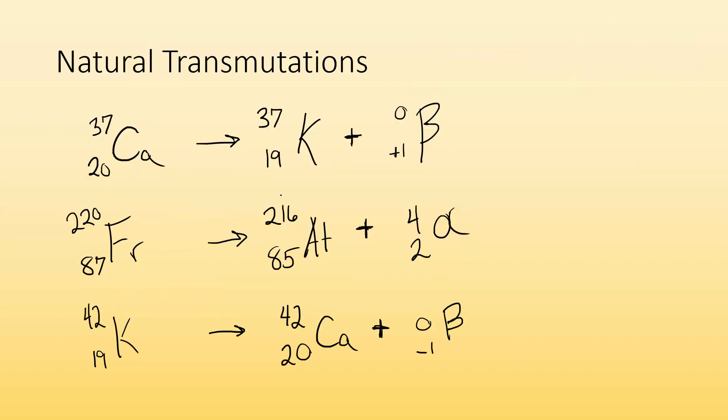Here are some examples of natural transmutations. Calcium-37 gives off a positron, changing the number of protons in the nucleus, so we have a new element. That's a natural transmutation. Francium-220 gives off an alpha particle, and the nucleus changed, giving us a new element. Potassium-42, same deal. It gave off a particle and changed the number of protons, which means we changed the element.